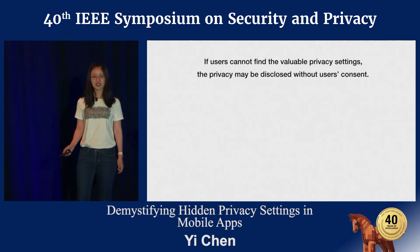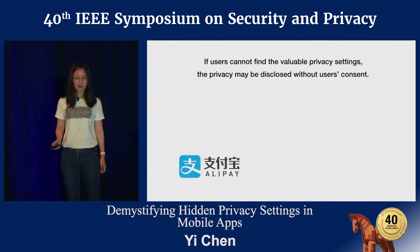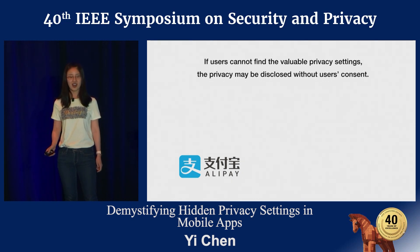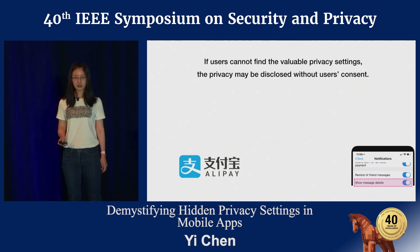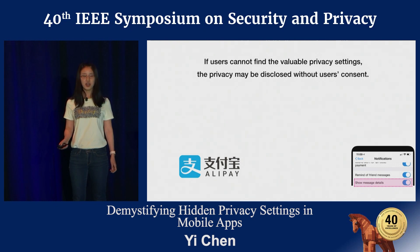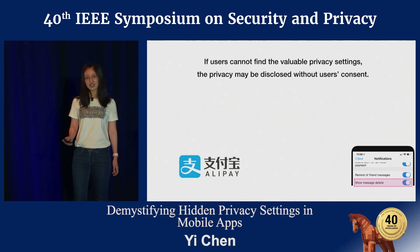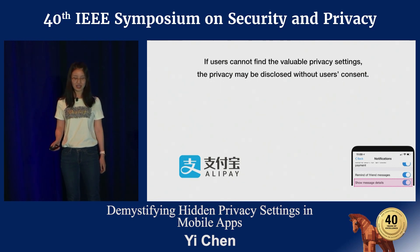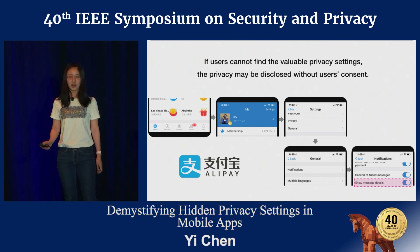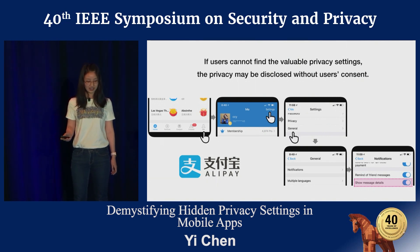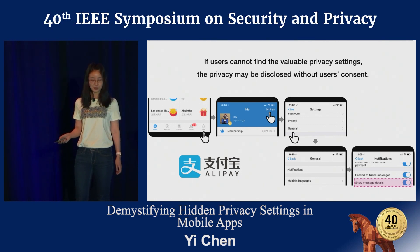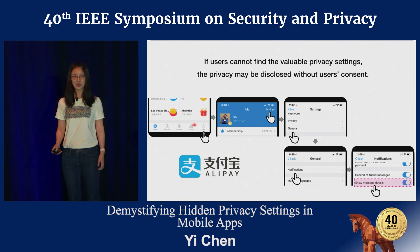So the problem comes. If users cannot find these valuable privacy settings, their privacy may be disclosed without their consent. Let's see an example: Alipay, a famous Chinese financial app with more than one billion users worldwide. It has a setting named Show Message Details, which controls whether to show message details such as account amount changes when the user locks the screen. It is a privacy setting, but it's hard for users to find in practice. Users can only find it by clicking the Me tab on the homepage, then Settings, then General instead of the Privacy indicator, then Notifications — this privacy setting hides too deep for users to locate.